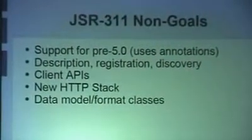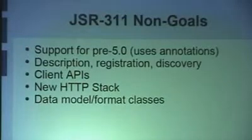JSR-311 non-goals is what they're not even shooting for. They're not going to try to support pre-Java 5 because they use annotations so much. They're not going to try to specify anything that has to do with description or registration or discovery. These are the things that you would find with SOAP, it would be a registry called UDDI. They're not going to try to specify client APIs. They're not going to specify new HTTP stack. And they're not going to specify the data model or format of the classes that go back and forth between these. So you can send anything, you can receive anything, we don't care. We're just going to try to make it easy for you to do this.